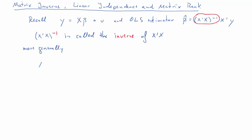So x prime x to the power of negative 1 is called the inverse of x prime x. More generally, we can calculate an inverse of a matrix A, some conditions on that later, and A to the power of negative 1, if A is a matrix, is called the inverse of A.